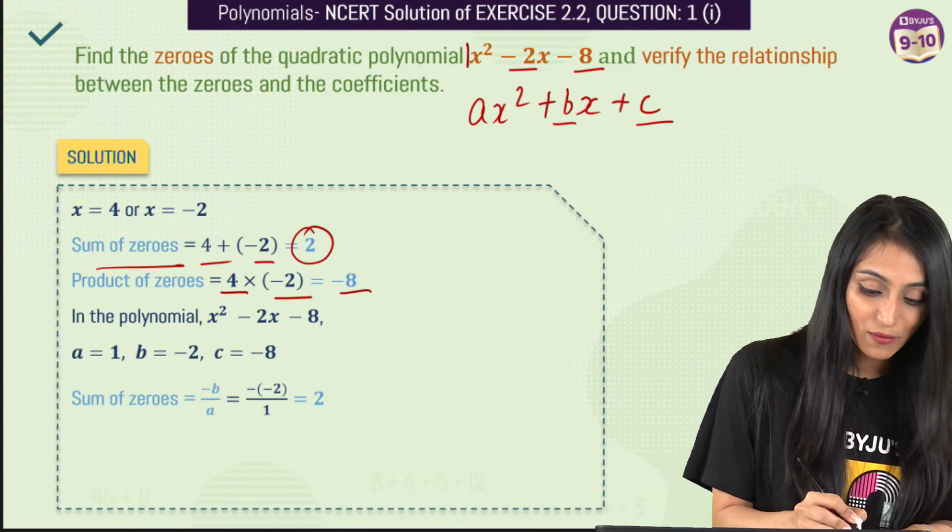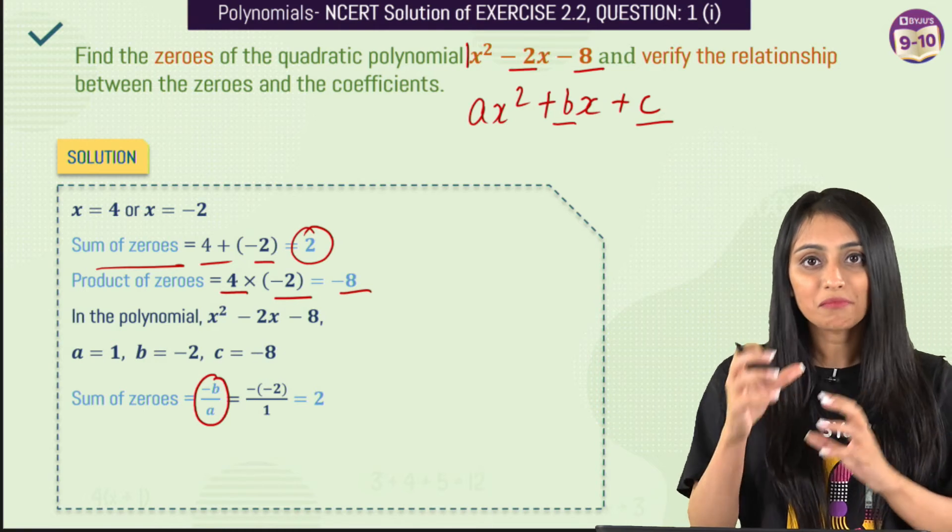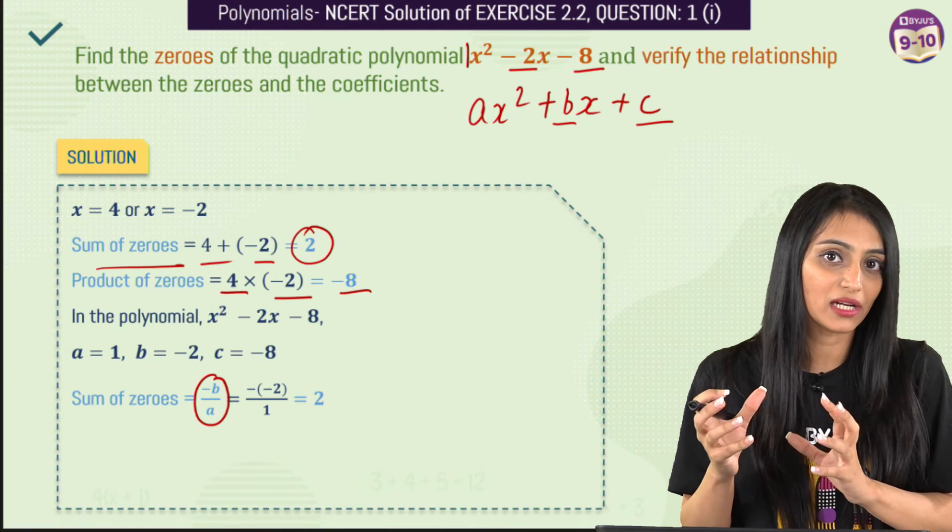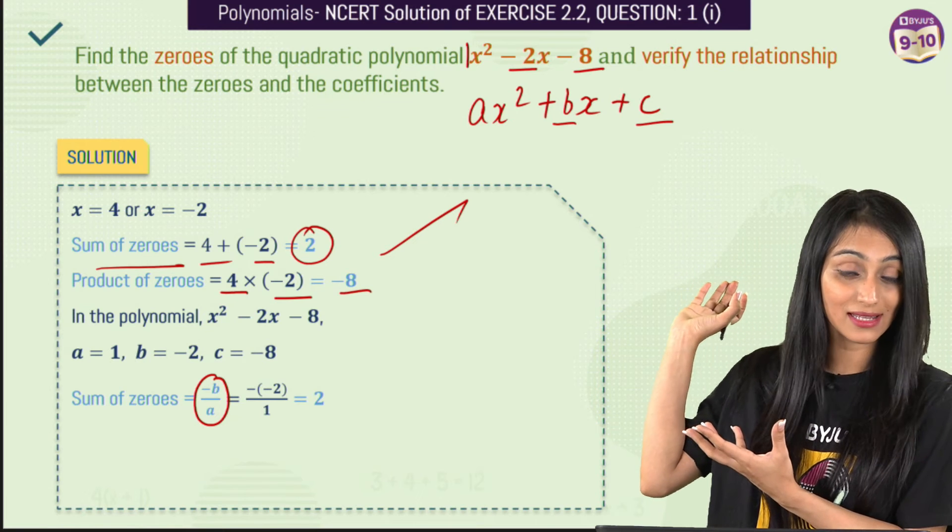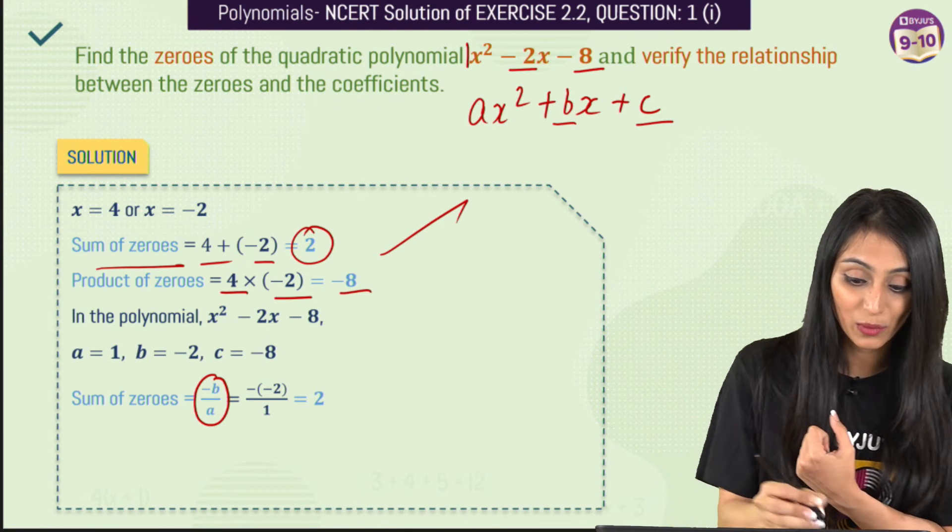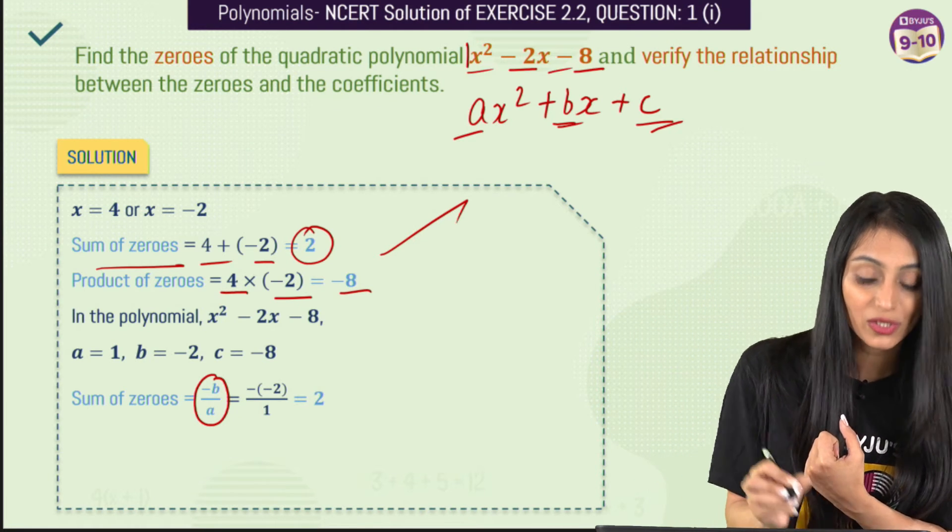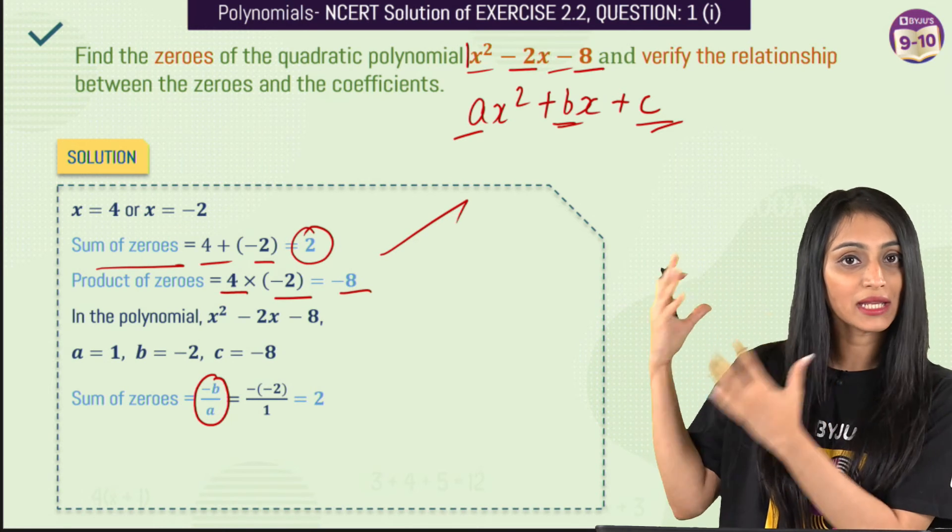Now all we have to do is, we have to check for sum of zeros which is minus b by a. That's how we verify the relationship between the zeros and the coefficients. Coefficients over here in this general form of the quadratic polynomial you can see that's a, b, c. Similarly here the coefficients are 1, minus 2 and minus 8.